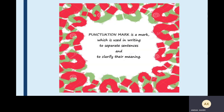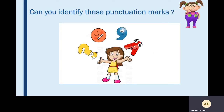Let me start with the definition of punctuation marks. What are punctuation marks? A punctuation mark is a mark which is used in writing to separate sentences and to clarify their meanings. We have different types of punctuation marks. Can you identify these punctuation marks? If yes, then quickly tell that to your parents. Here we have: the first one — the question mark, second — full stop, third — comma, and fourth — capital letter.